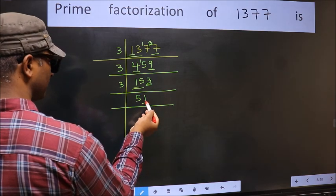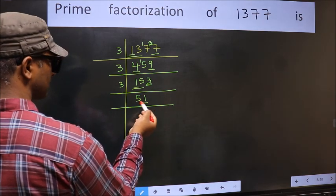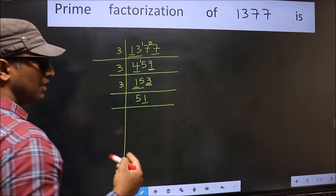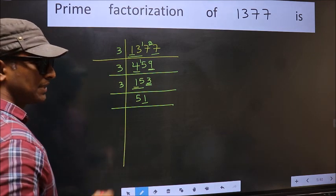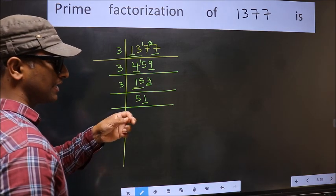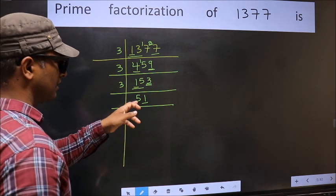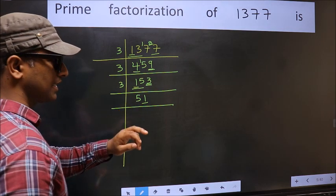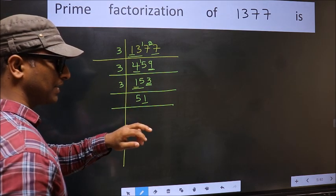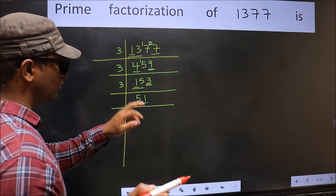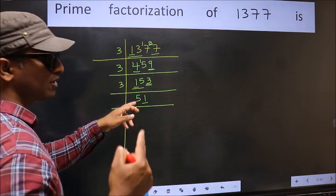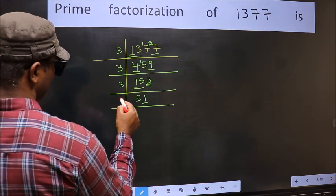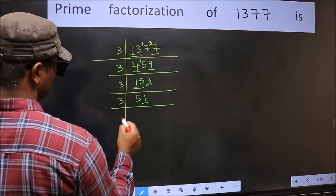Now the last digit is 1, which is not even, so not divisible by 2. To check divisibility by 3, we add the digits: 5 plus 1 gives 6. 6 is divisible by 3, so this number is also divisible by 3. So take 3 here.